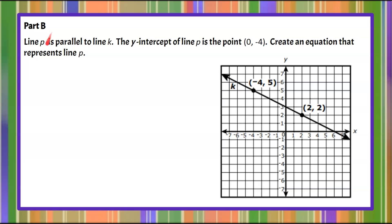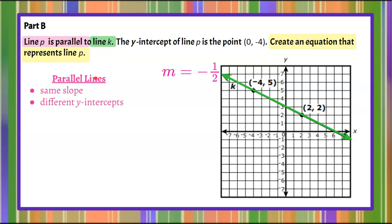Let's move on to part b. Line p is parallel to line k — we have line k from part a. The y-intercept of line p is the point (0, -4), and you are asked to create an equation that represents line p. Parallel lines are lines that have the same slope and different y-intercepts. So we know that line p is going to have a slope of negative 1/2.